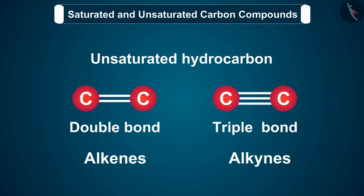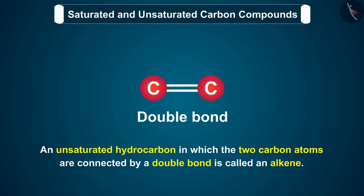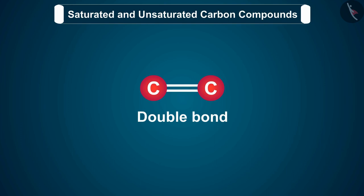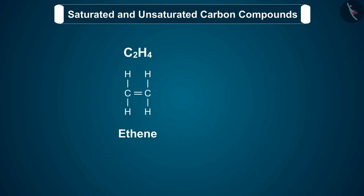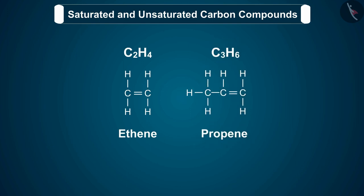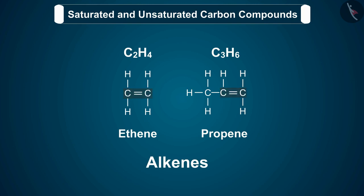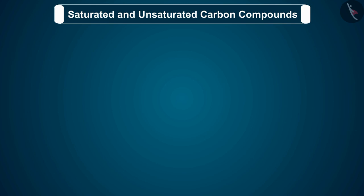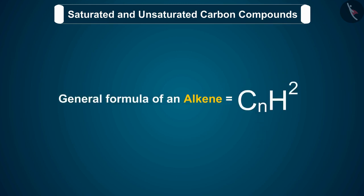An unsaturated hydrocarbon in which two carbon atoms are connected by a double bond is called an alkene. These alkenes contain a double bond between two carbon atoms, which is formed by the sharing of two pairs of electrons. Ethene (C2H4) and propene (C3H6) are two alkenes because they contain a double bond between two carbon atoms. Also, there can be no alkene having only one carbon atom.